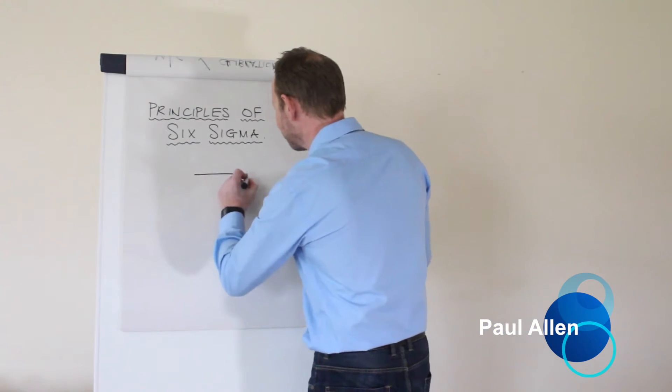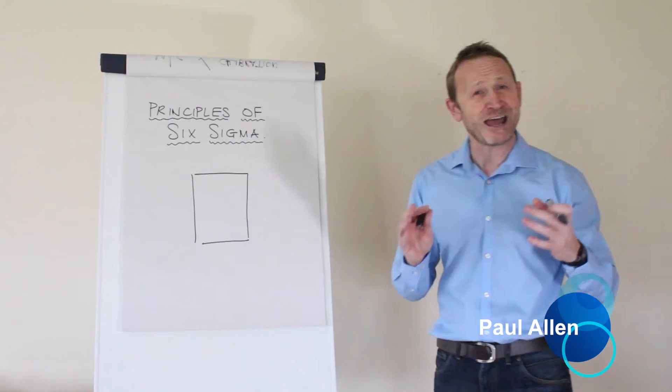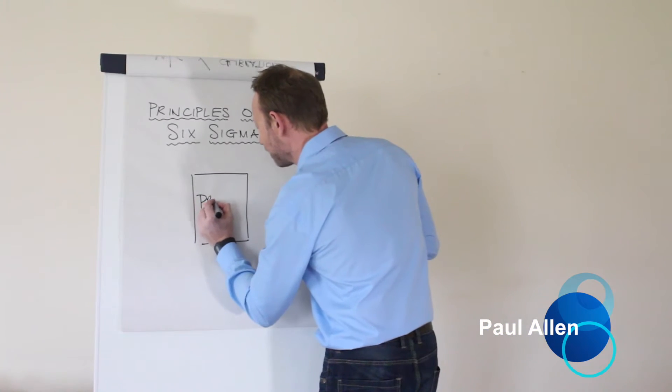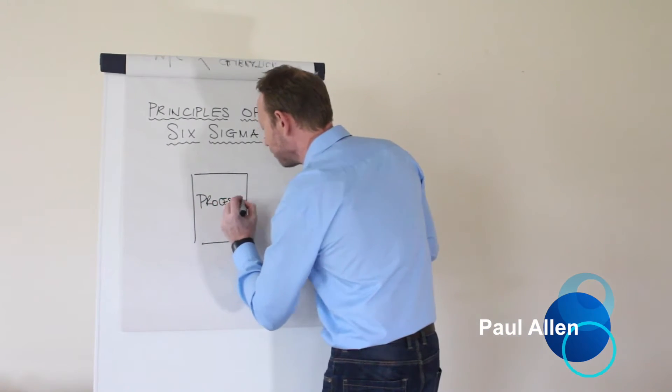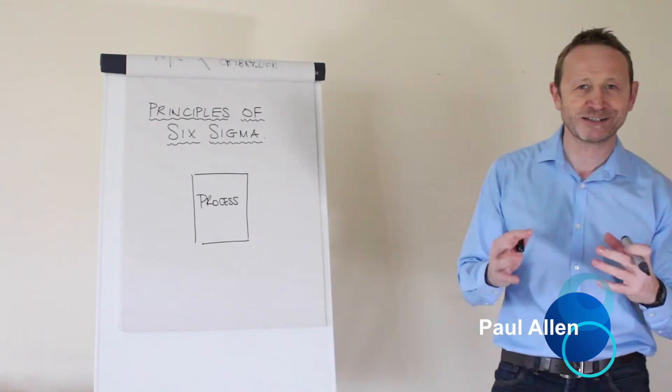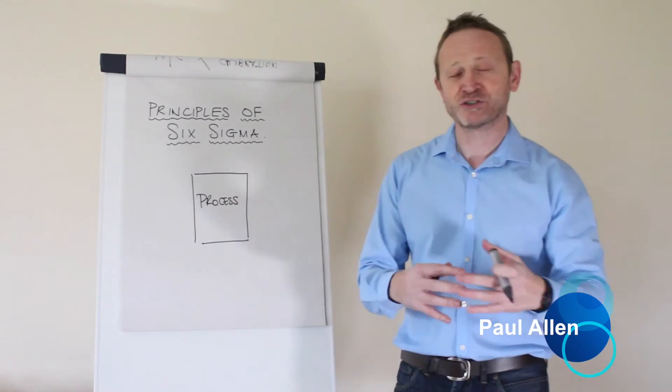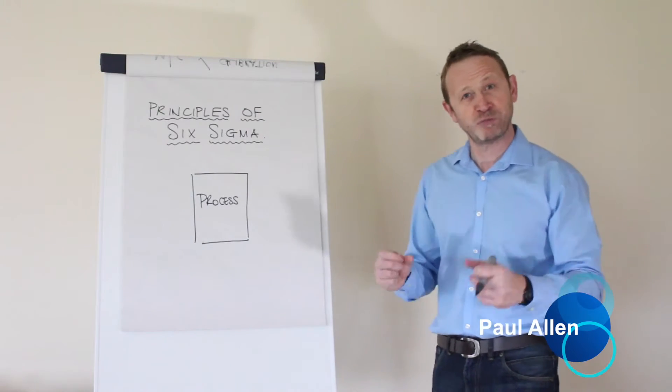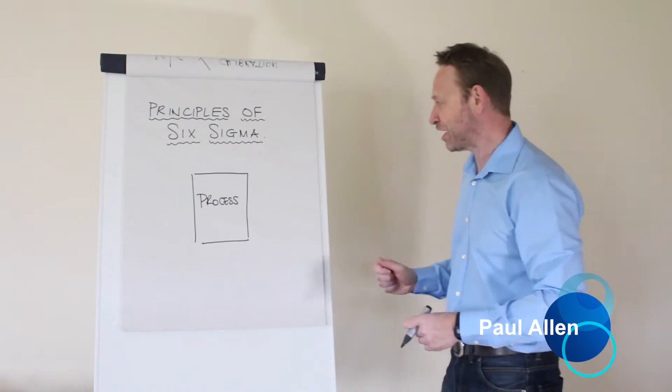The first principle in Six Sigma is that every process is the same. It doesn't matter whether it's a machine, whether it's a marketing process, whether it's a sales process, whether it's a molding machine, every process is the same and all black belts think of processes the same way.